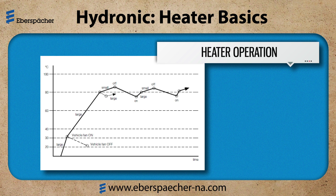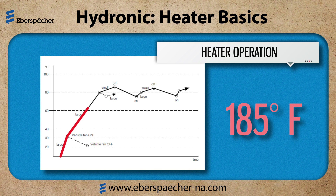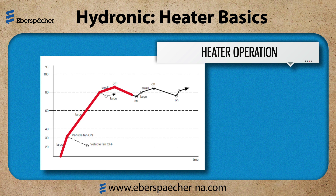Here is the operation of the heater. This is the only job of the heater — to maintain coolant temperature. It starts and heats the coolant to about 185 degrees Fahrenheit. If it maintains the temperature, then it will cycle down to low operation. Once the coolant cools down, it will resume operation in high. If temperature is maintained in low, then the heater cycles into standby. The coolant pump is circulating, but there is no flame. The heater will restart once the coolant cools down.